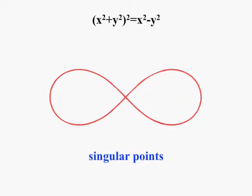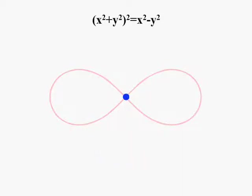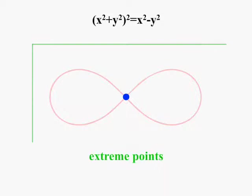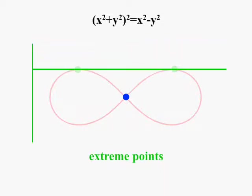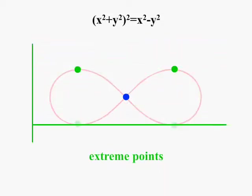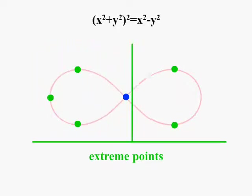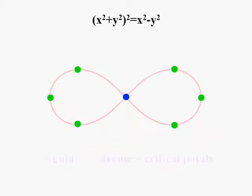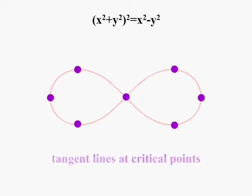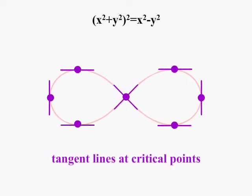We start with computing the singular points. Then we determine the extreme points by using the three blind algorithm. We refer to singular and extreme points collectively as the critical points. We need to compute tangents to the curve at these points.